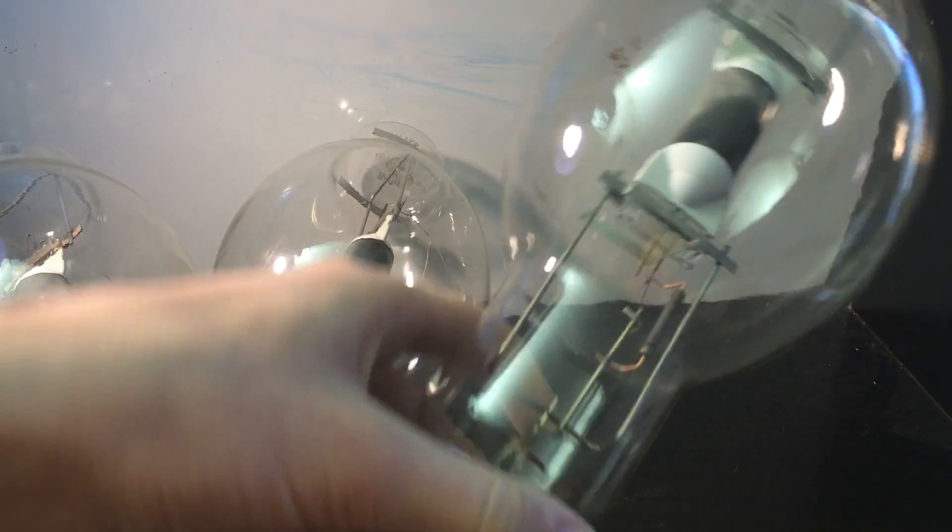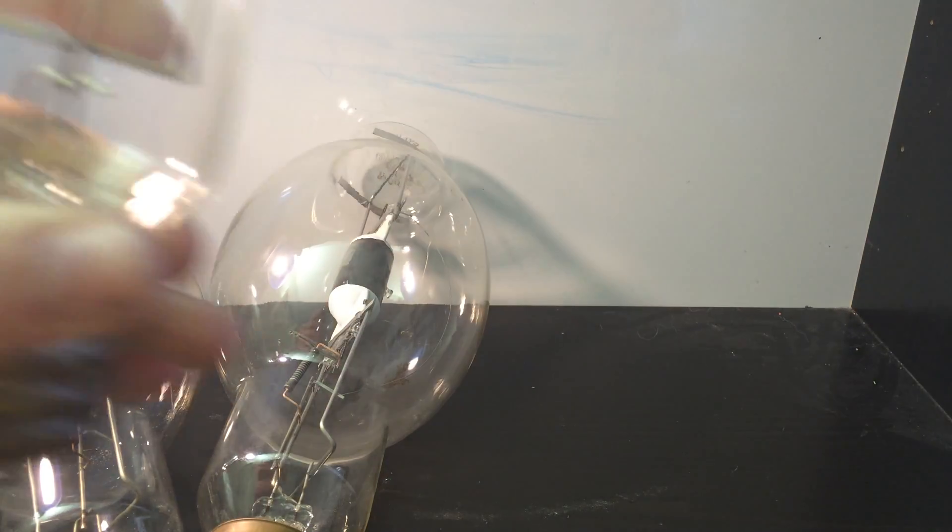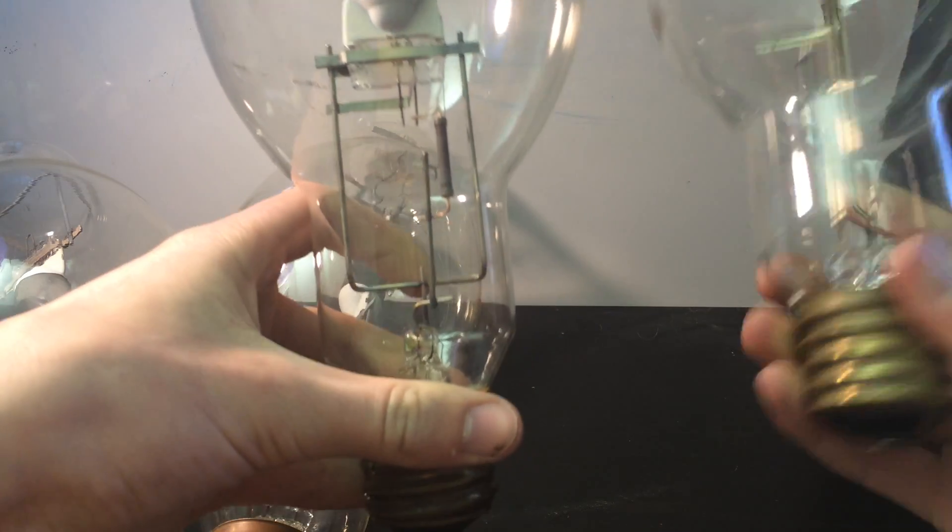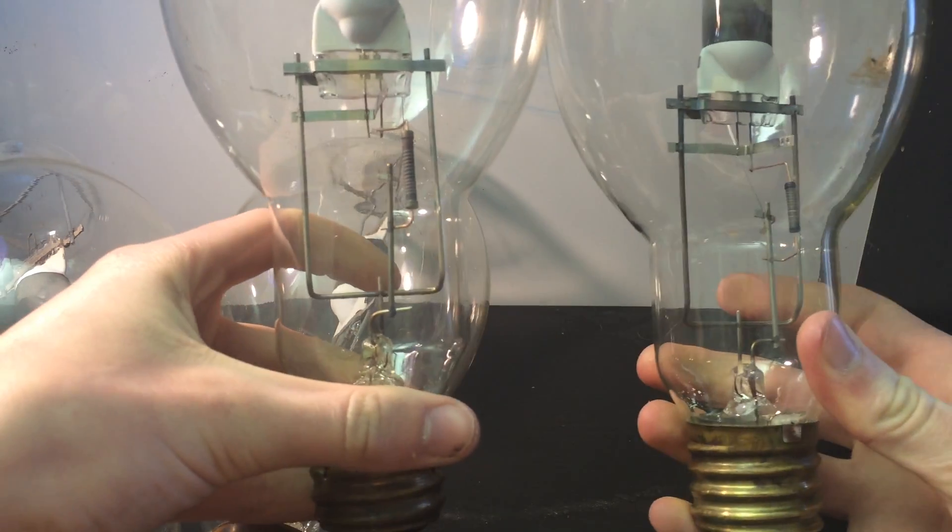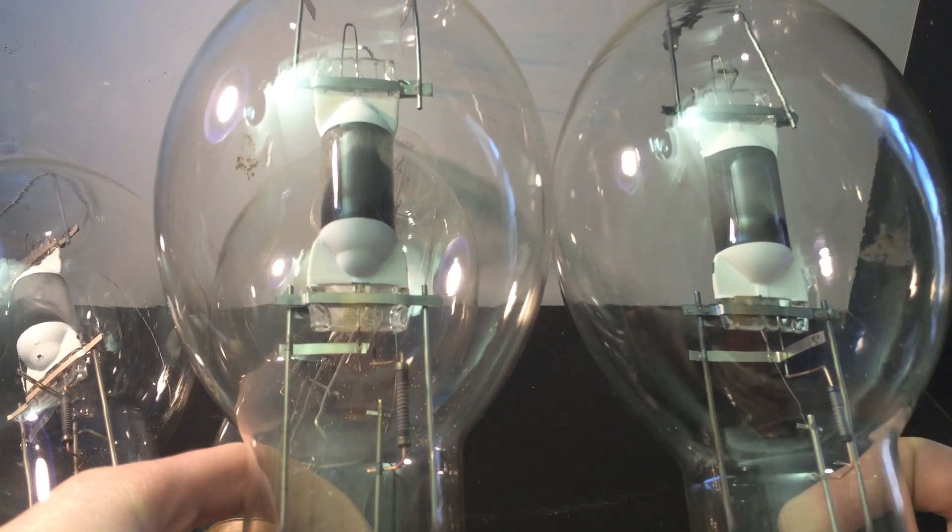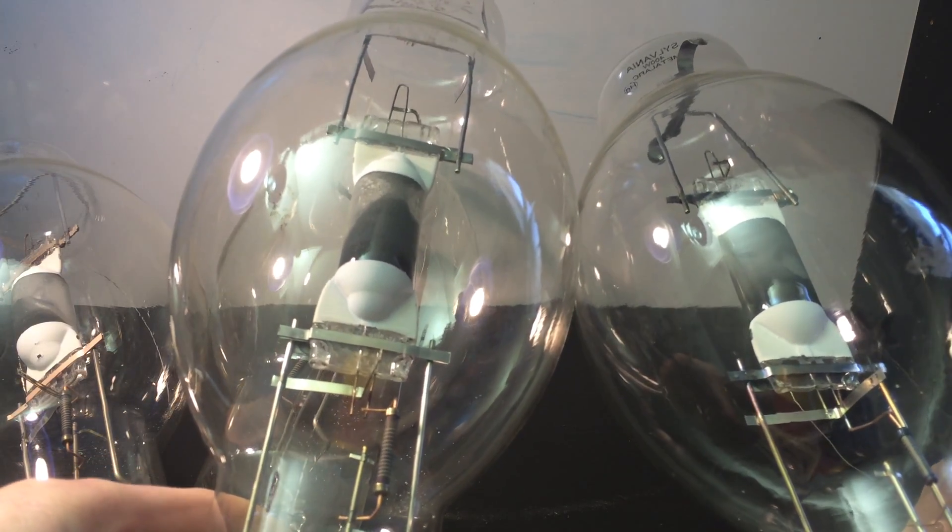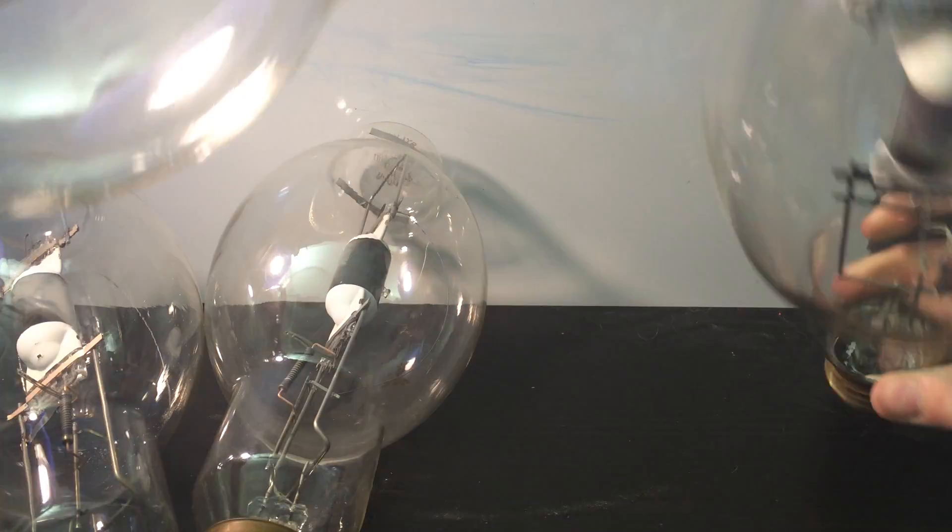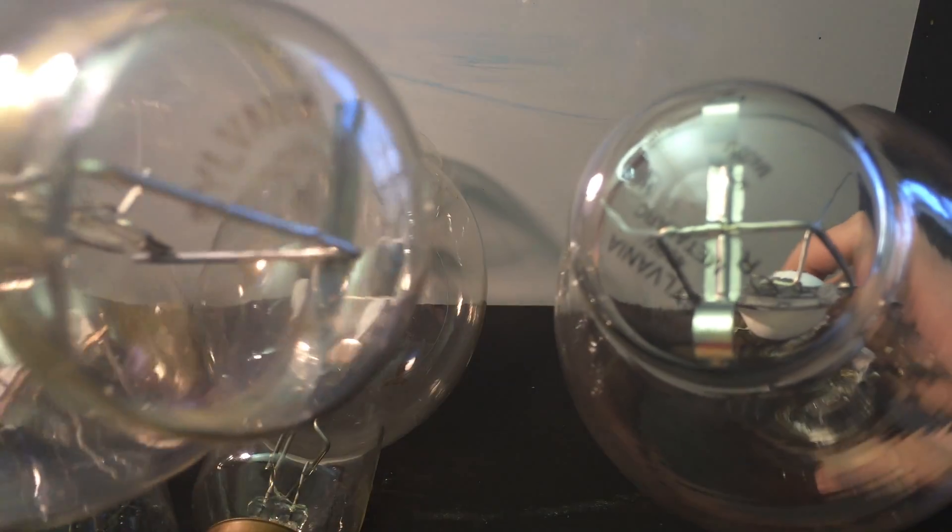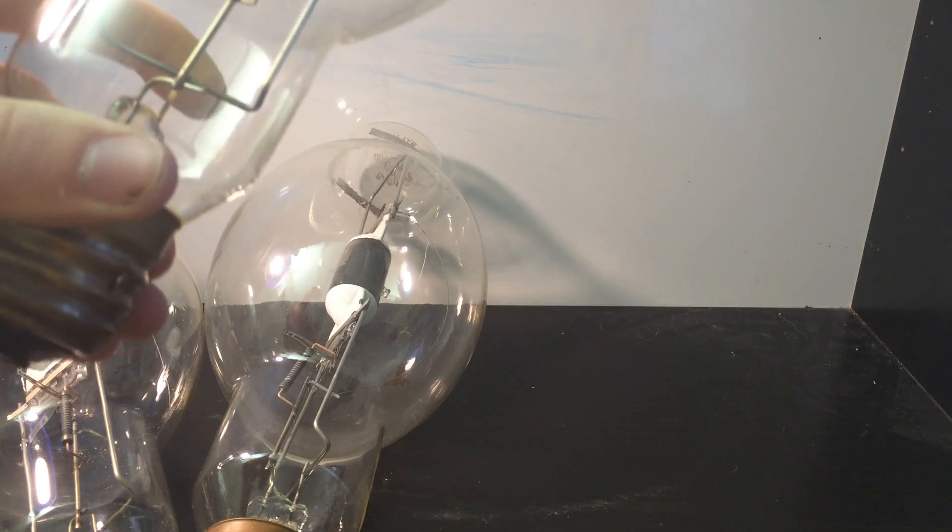This will compare it to the newer version, but that's not the modern version anymore. Obviously the newer version, the arc tube is different, and the way the support is different, and the etch. The etches are different, but this newer bulb will be in a different video.